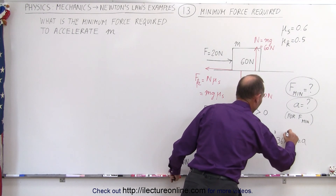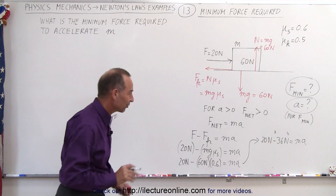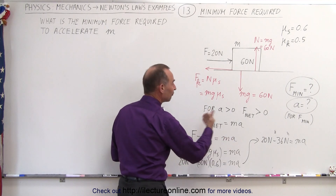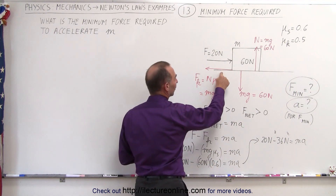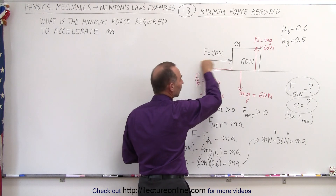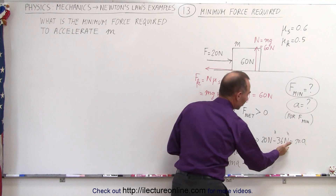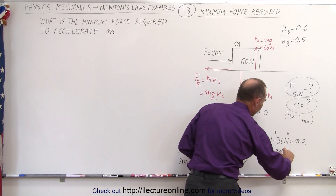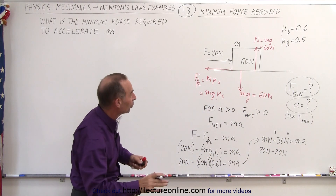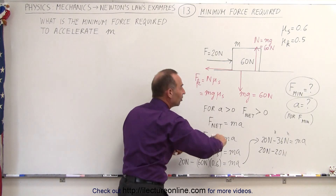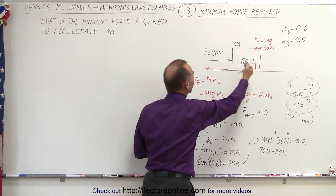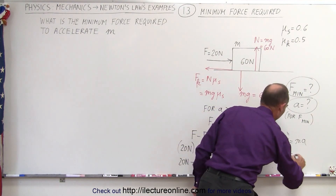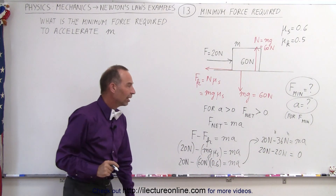Now, I'll put 36 Newtons in quotation marks because friction force is simply a reactionary force which can never exceed the force that caused it in the first place. This friction force is caused by the force being applied to it. So you're going to get 20 Newtons minus 20 Newtons, because the friction force will only equal the force applied to the block until that applied force becomes greater than the maximum friction force of 36 Newtons. Therefore, there will be zero acceleration when 20 Newtons is applied.